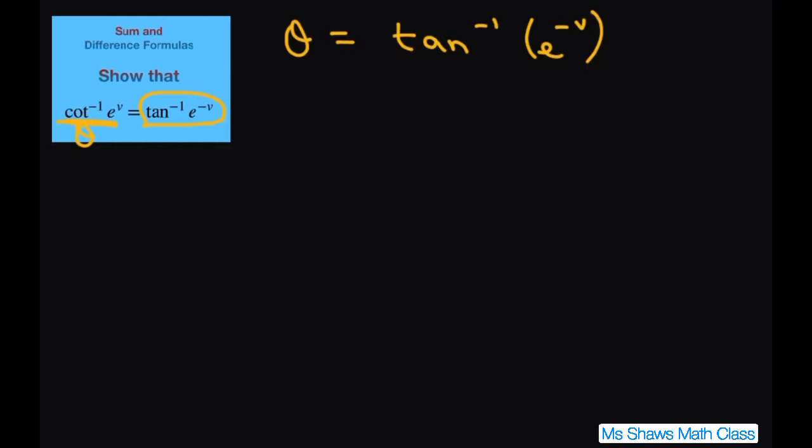Now to solve this we have tan of theta equals e to negative v. So therefore cotangent of theta equals 1 divided by e to the negative v, just using your reciprocal properties. And that equals e to the v. So cotangent of theta equals e to the v. We already can kind of see it there.